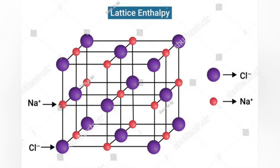The total enthalpy of a system cannot be measured directly because the internal energy contains components that are unknown, not easily accessible, or are not of interest in thermodynamics. In practice, a change in enthalpy is the preferred expression for measurements at constant pressure because it simplifies the description of energy transfer, when transfer of matter into or out of the system is also prevented and no electrical or shaft work is done.